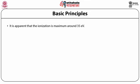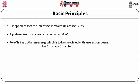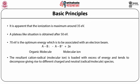Continuing with the basic principles of mass spectrometry: ionization is maximum around 35 electron volts and a plateau-like situation is obtained after 50 electron volts. Generally we give 70 electron volts, which is the optimum energy for the electron beam. If AB is an organic molecule with a pair of electrons, it is bombarded with an electron beam to give the molecular ion AB⁺• (radical cation) plus two electrons. The resultant cation radical is loaded with excess energy and tends to decompose, giving rise to different charged and neutral species, which may be radicals or molecules. The resultant charged species are called fragment ions.